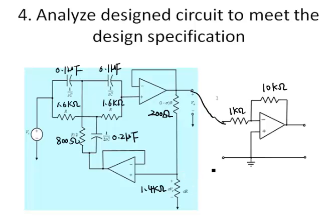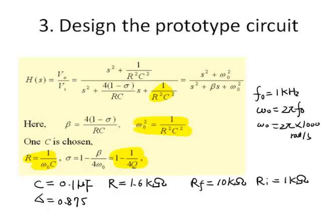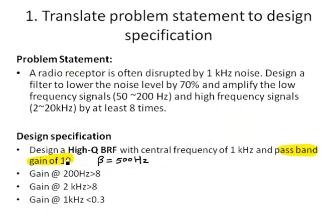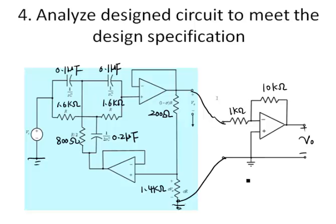We need to connect the two stages with common grounds connected together. We will skip the step of analyzing the design circuit to meet the design specification — theoretically, we can derive the transfer function and show that it meets the design specification. The pass band gain should be 10 because Rf over Ri is 10.